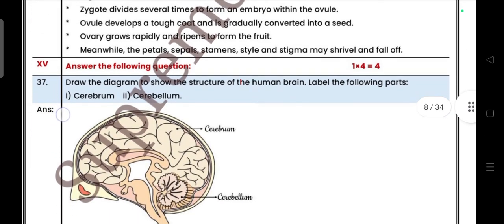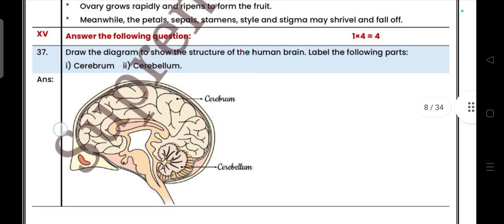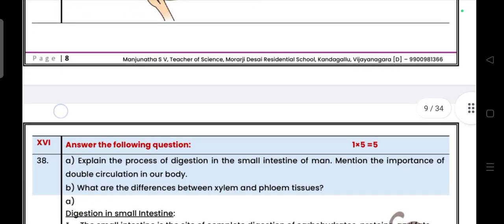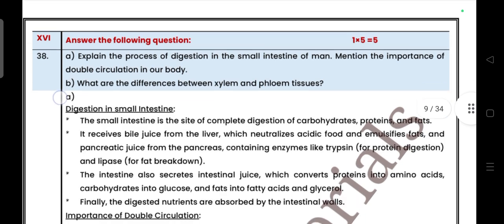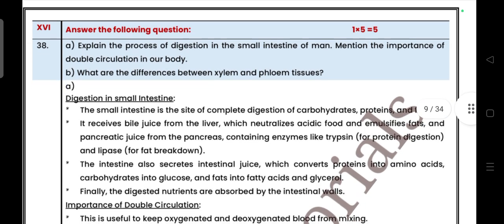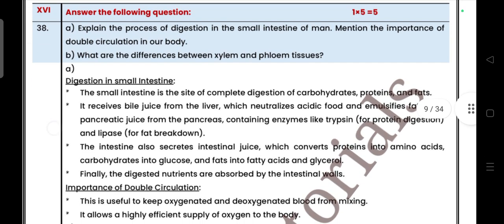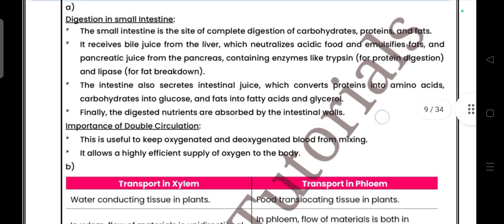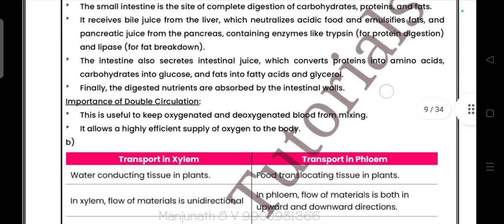Next, four mark question. Draw a neat diagram of the brain and label the parts. Last main: explain the process of digestion in small intestine of a man. Mention the importance of double circulation in your body. What are the differences between xylem and phloem? Take answers.